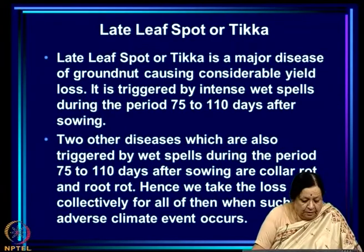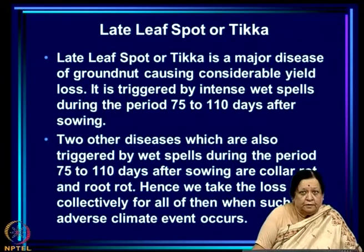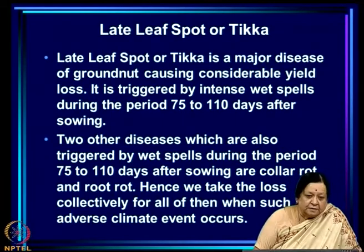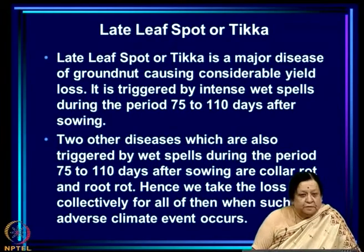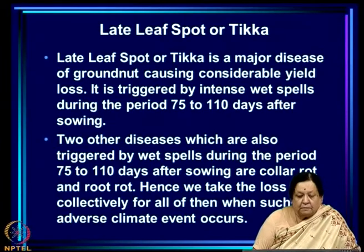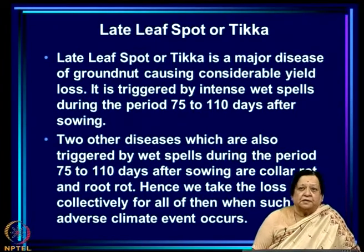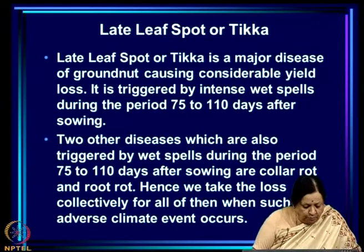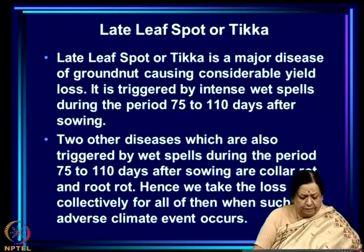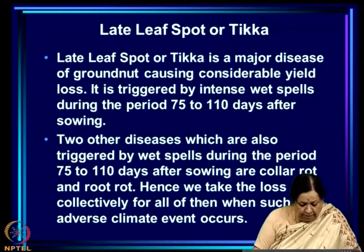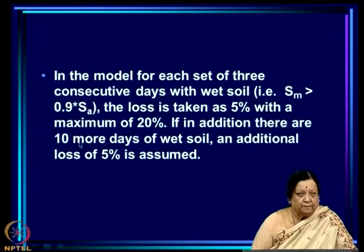Another important disease is late leaf spot, or tikka, which is a major disease of groundnut causing considerable yield loss. While leaf miner pest population increases during dry spells, tikka infests groundnut when there are wet spells. Tikka is triggered by intense wet spells during the period 75 to 110 days after sowing. There are two other diseases also triggered by wet spells during the same period: collar rot and root rot.